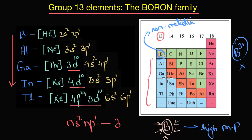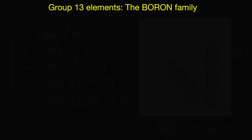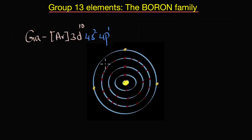Before discussing the various properties of group 13 elements, we must remember that all the variation seen in the trends of these properties is due to the intervening d and f orbitals — more precisely, because of the poor shielding effect of the d and f orbitals. Let's take a quick recap using gallium as an example.